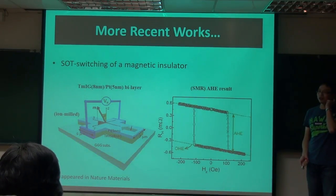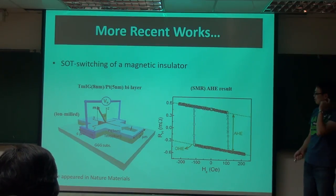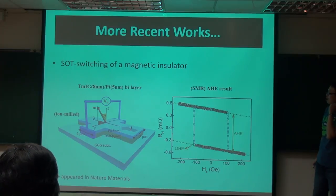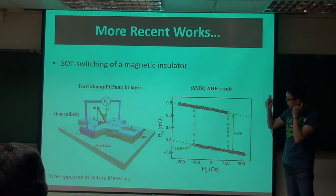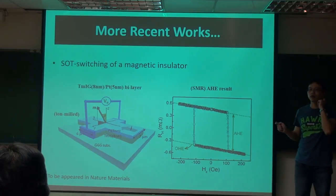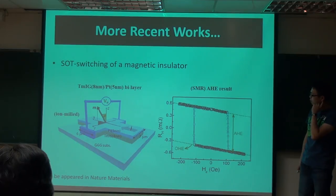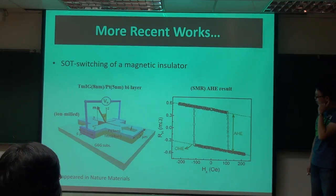If you've seen my first presentation at ICAUMS, the data was pretty noisy. It took us a long time to refine the measurement. Also, this device was ion-milled. The first device we reported was extended TMIG, but now it's fully ion-milled. I think that's probably the reason why the data looks cleaner now.